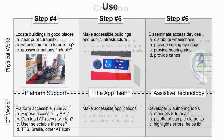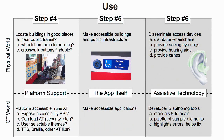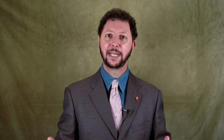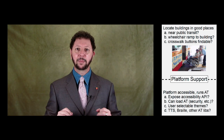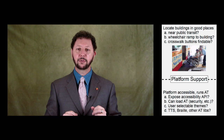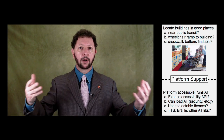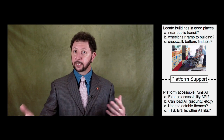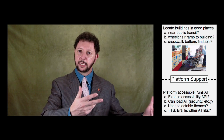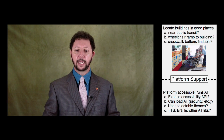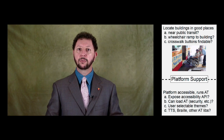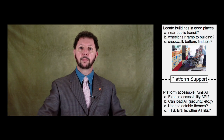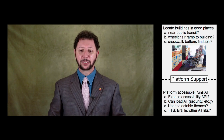We also have the use side. In the built environment, we want to make sure that our accessible building is located near public transit, that it has a wheelchair ramp up to the entrance. If you are around buildings that are accessible, you want the crosswalks to be accessible, to have buttons that are findable, and perhaps emit tones or voice to help people get to your otherwise accessible building.